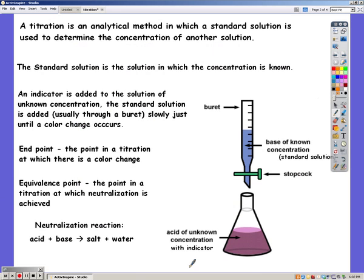An indicator is added to the solution of the unknown concentration, and the standard solution is usually added through a burette, slowly until you have a color change.